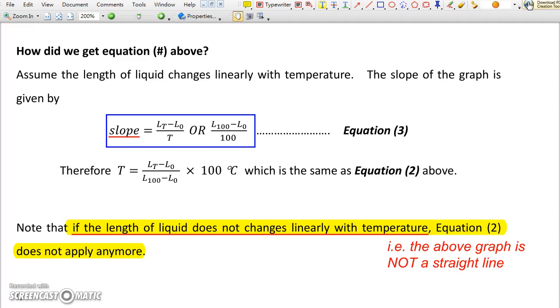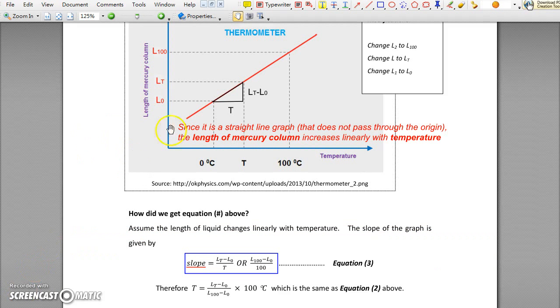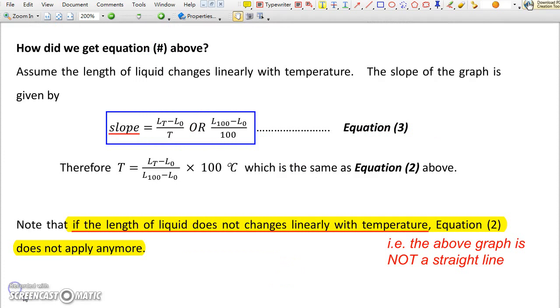Equation number 2 is not anything special. It comes from the calculation of the slope of the straight line graph. So that from that small triangle, you can see LT minus L0 over T, which is the slope, equals L100 minus L0 over 100, that is equation 3, which may then give you equation 2 above. So you can see equation 2 actually comes from a calculation of the slope of a straight line.